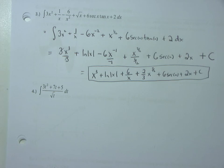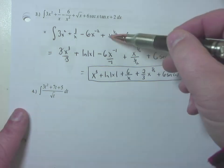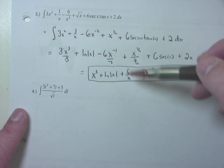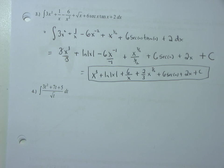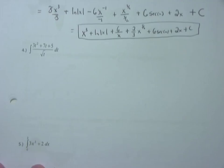Notice something about integral calculus that will haunt you for a very long time: first you do algebra, then you apply your calculus, then you do more algebra. For every line of calculus, you're doing at least two or three lines of algebra — that's basically the ratio.